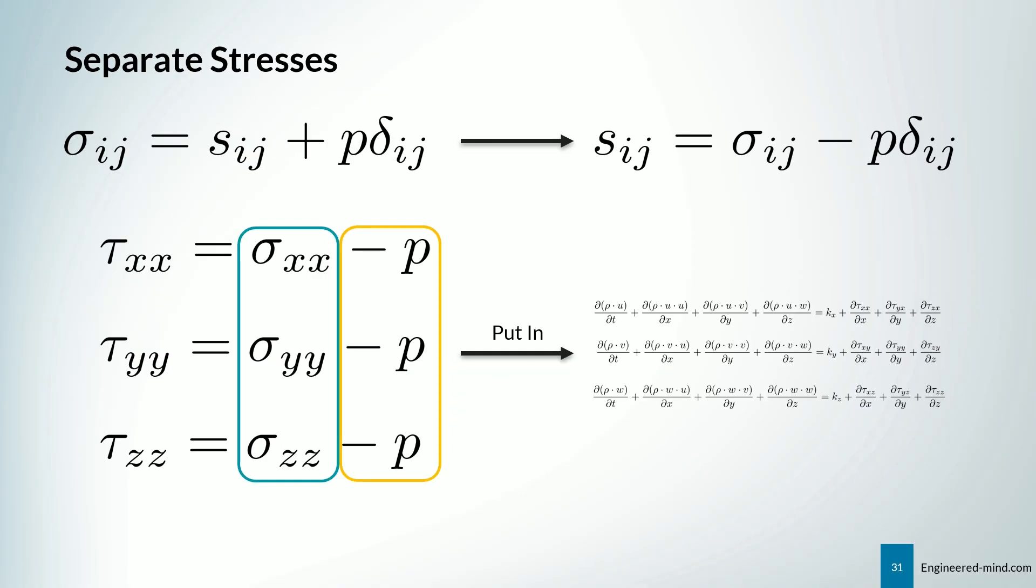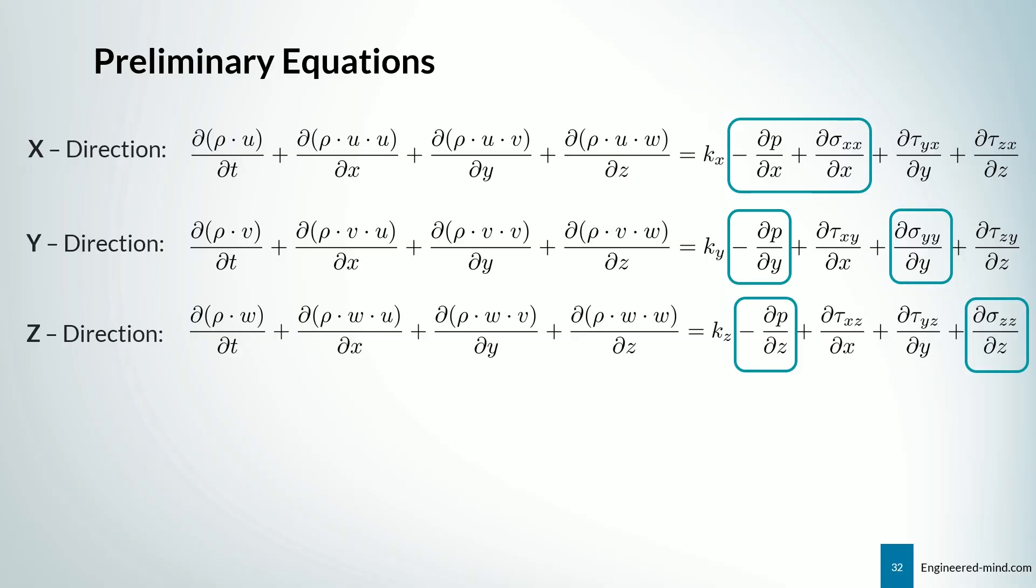So we can also separate the stresses, as you can see right here, with the equation as you know it from the slides before. And we can just rewrite it in terms of Sij equals sigma ij minus P delta ij. And applied to our notation, we can say that it's nothing else than tau xx equals to sigma xx minus P. And the same for the y and z direction. And we put it into our equations that we have already derived. And what we end up with is the following equations. The question now is, where does our material law come into play?